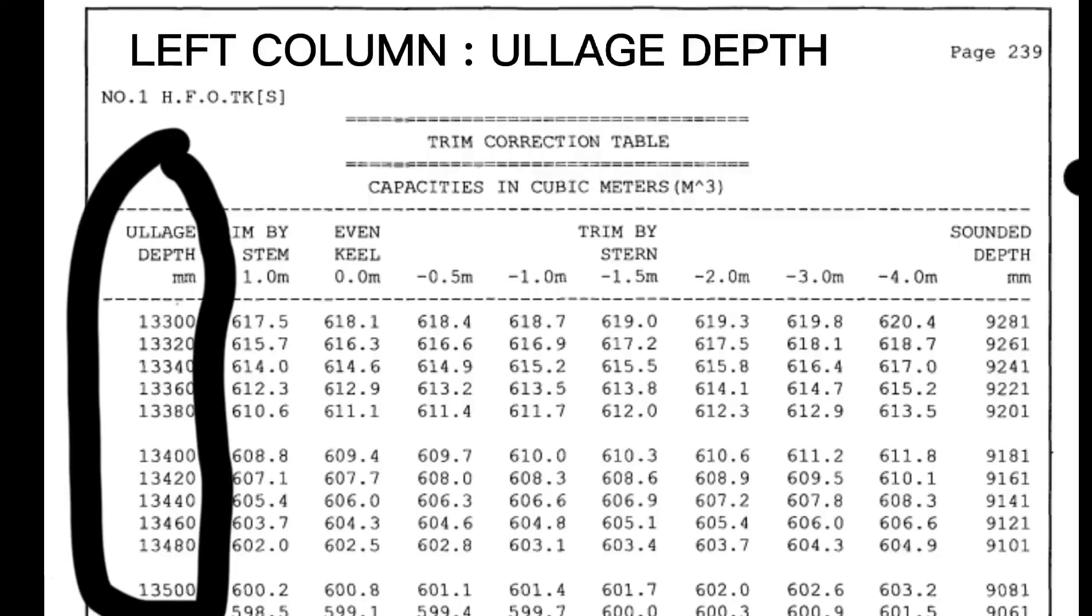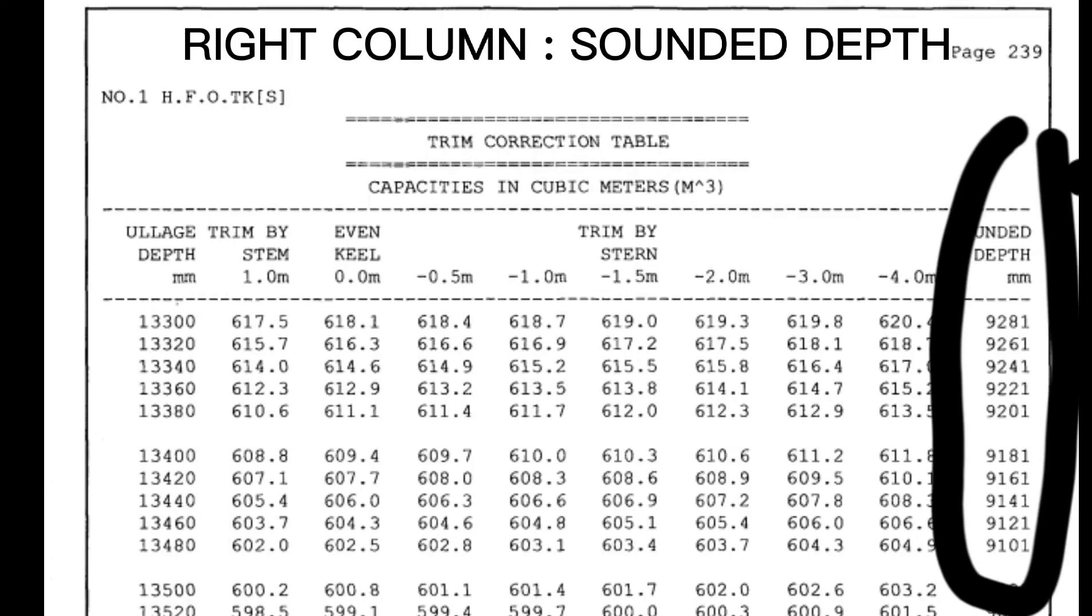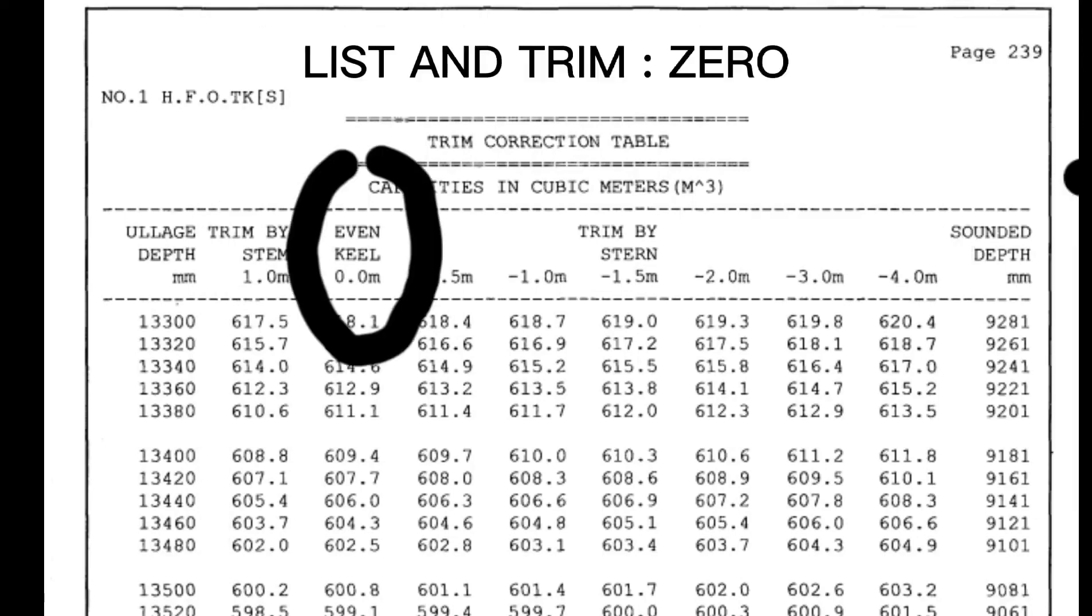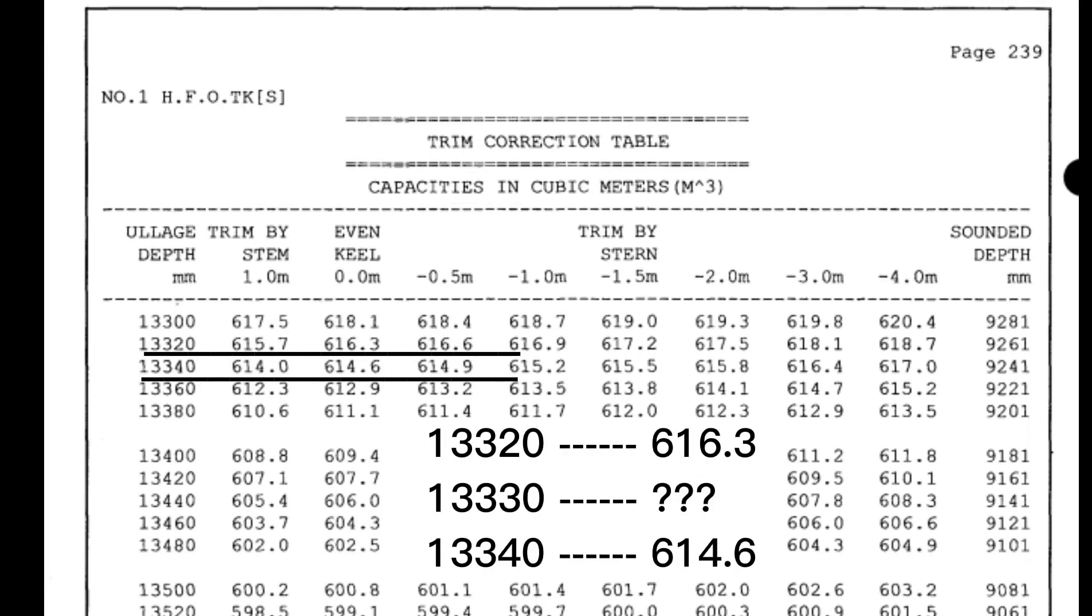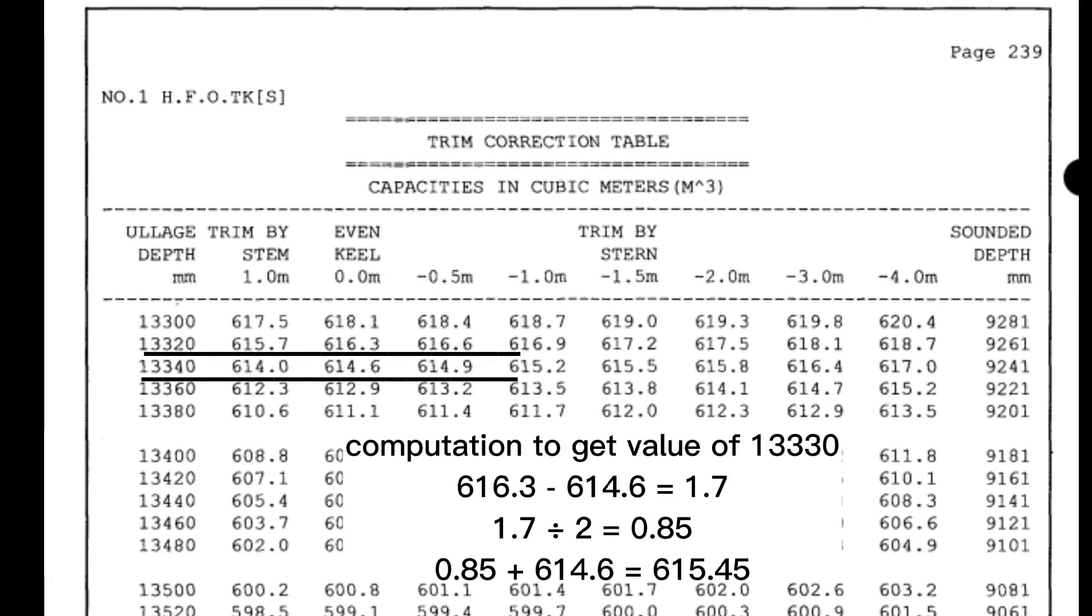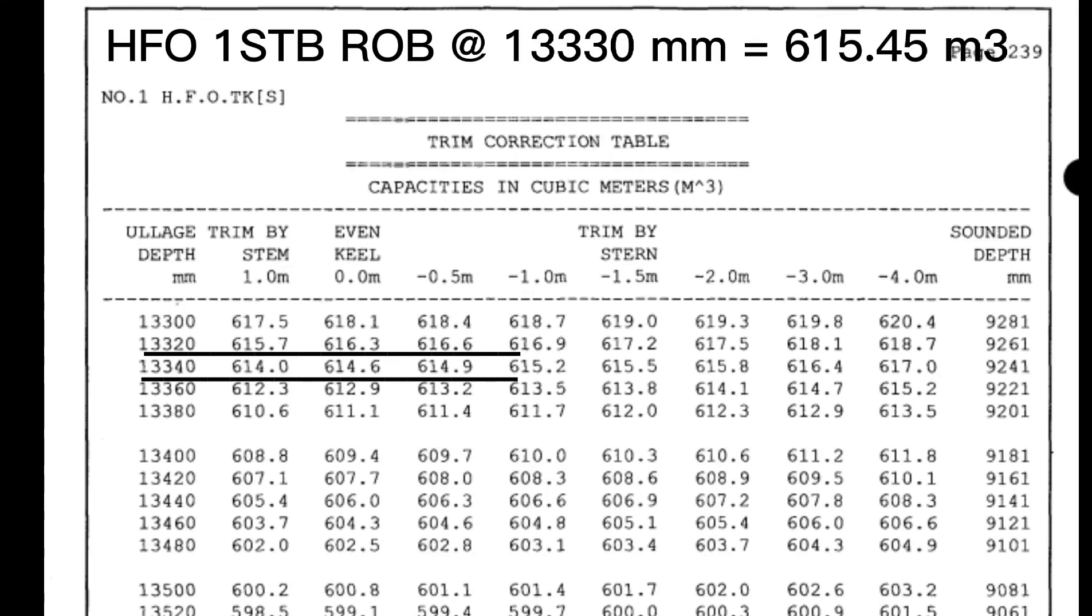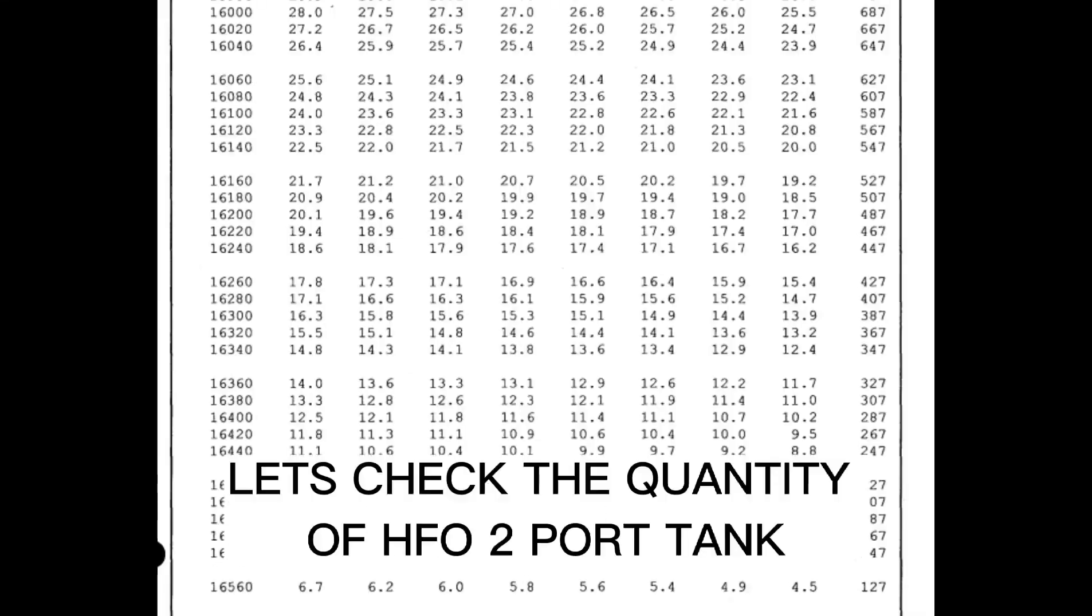Let's check the measured sounding of engine cadet. Left column ullage depth, right column sounding depth. List and trim zero. First is ullage of HFO bunker tank 1 starboard. Since 1333 centimeter is in between 13,320 and 13,330 millimeter, 1,333 centimeters is between 616.3 and 614.0 cubic meter. HFO 1 starboard ROB at 13,330 millimeters equals 615.45 cubic meters.